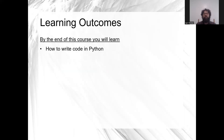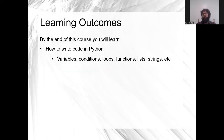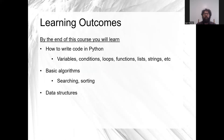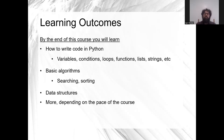In this course you'll learn to write code in Python. Already after this lecture you'll be able to write some Python code. You'll know what variables, conditions, loops, functions, lists, and strings are, the difference between print and return, and what classes are. You'll also learn basic algorithms like searching and sorting, and possibly some basic data structures depending on the pace — this is the first time I'm teaching this course.